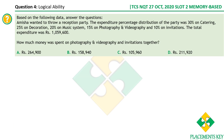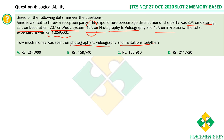Next question: Amisha wanted to throw a reception party. The expenditure percentage distribution is: 30% on catering, 25% on decoration, 20% on music system, 15% on photography and videography together, and 10% on invitations. The total expenditure was 10 lakh 59,600. We need to find how much she spent on photography, videography, and invitations together — which is 15% plus 10%, totalling 25%.